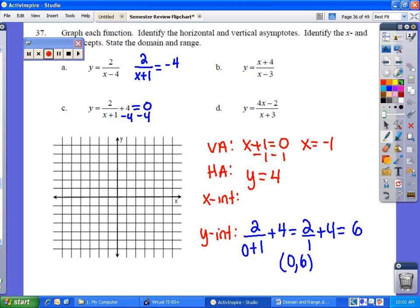The next thing you're going to do is cross multiply, and you're left with four times x plus one equals two, and it's negative four. The next thing you want to do is distribute.